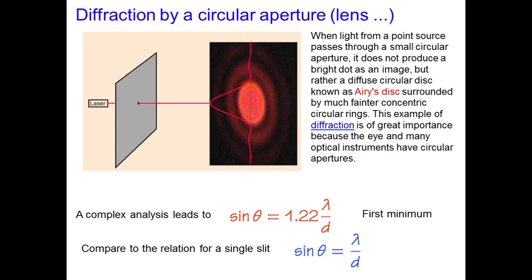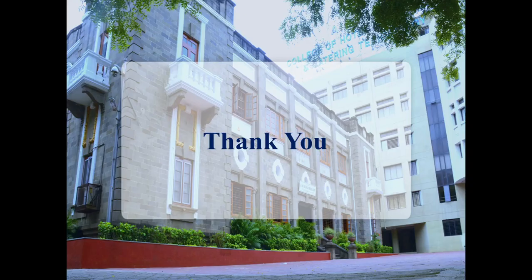A complex analysis leads to, for this particular circular aperture, sin θ = 1.22 λ/d, from which we can get the first minimum. And if we compare this with the relation for a single slit diffraction pattern, we can get the first minimum at the point sin θ = λ/d. Thank you.